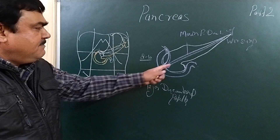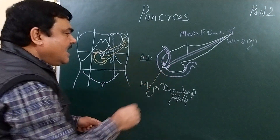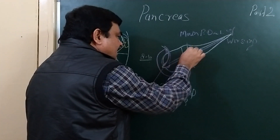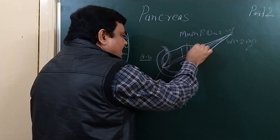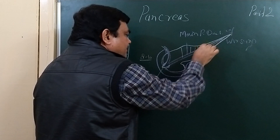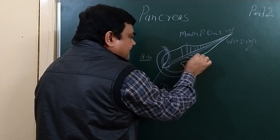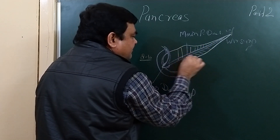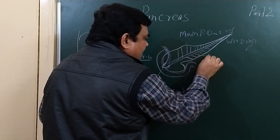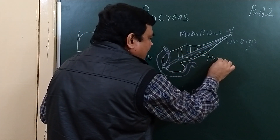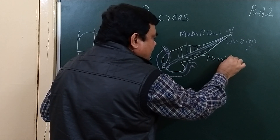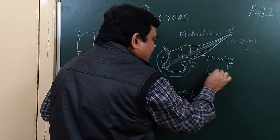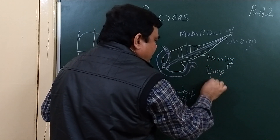This is the main pancreatic duct. In the main pancreatic duct, small ducts open and form the herring bone pattern. This is known as the herring bone pattern.